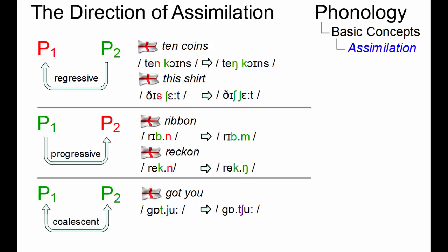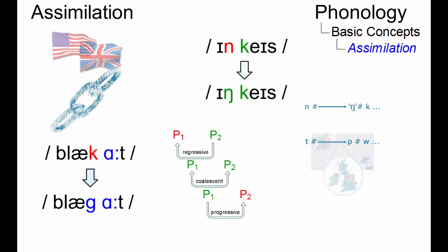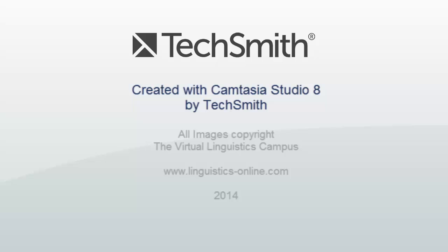In present-day English this process has occurred in many words historically, and the pronunciation with a fused consonant is usually obligatory nowadays. Take assure as an example. In present-day English, assimilation is mainly optional and typically occurs in rapid conversation.